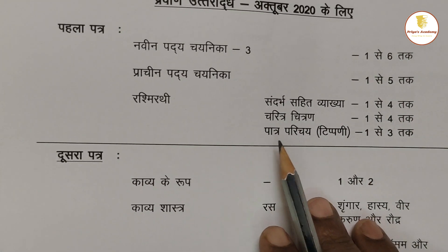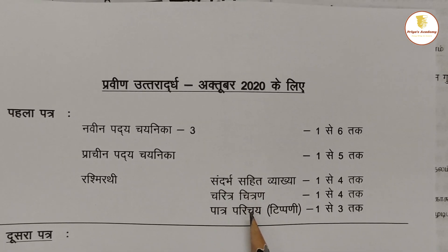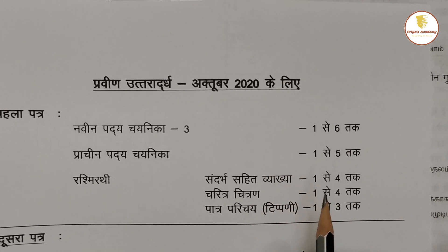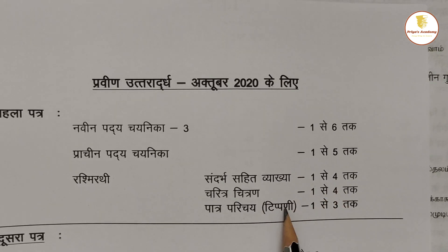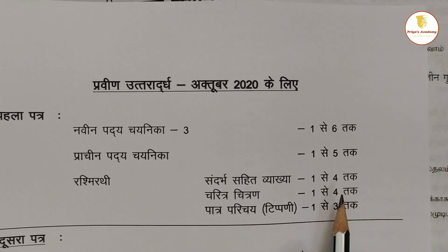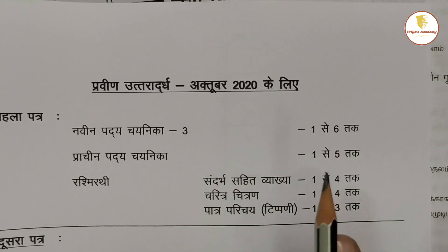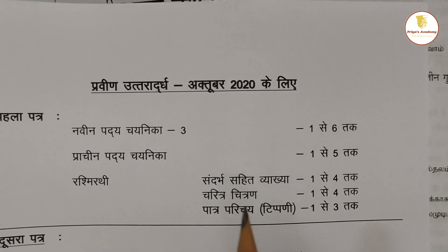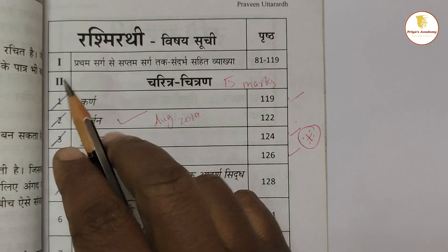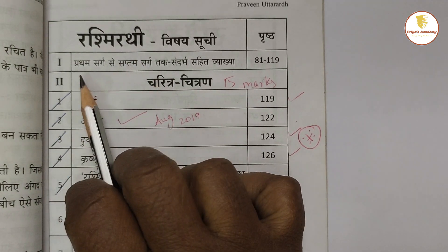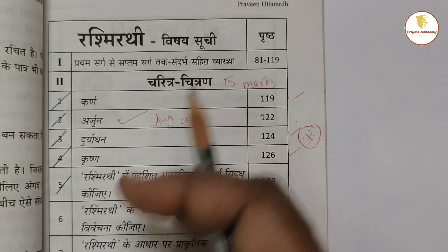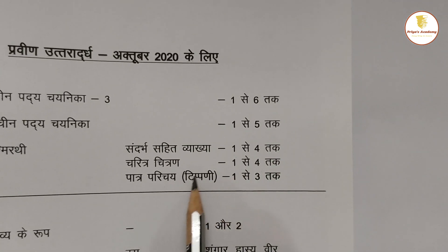Next, Rashmi Rathi. This is actually Mahabharata. There are characters — ERC 4, main characters 4, Tipni 3. It's a perfect first class. Let's look at Rashmi Rathi. Now we're going to study Rashmi Rathi in the first class. We're going to study ERC sections 1 to 4.